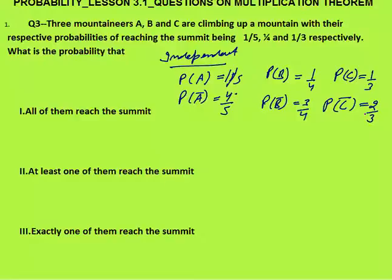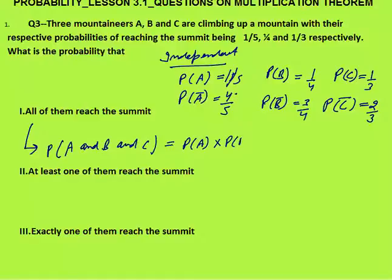The first part asks: what is the probability that all three of them reach the summit? As events are independent, probabilities get multiplied: P(A) × P(B) × P(C) = 1/5 × 1/4 × 1/3 = 1 by 60.